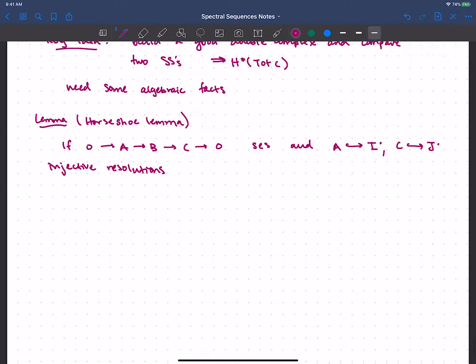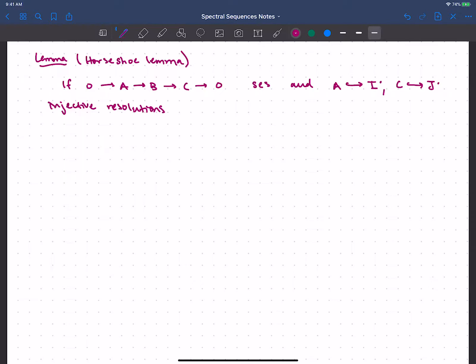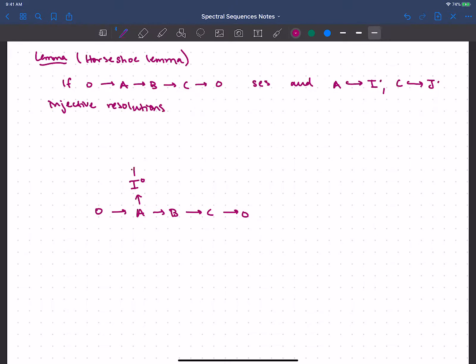Really what I want to say is that there's a nice injective resolution of B, but let me set that up so that it looks horseshoe-like. So I have my short exact sequence, and then the game here is that you draw your injective resolution of A, and then you draw your injective resolution of C, so we call that J, J0, J1, and so on, and the whole idea is to get a nice resolution of B.